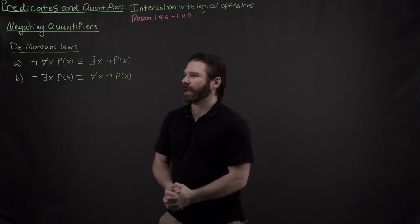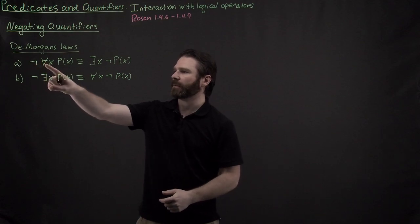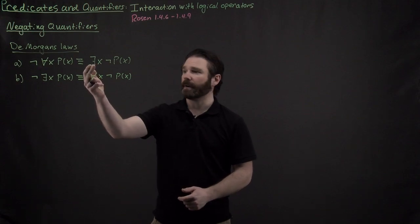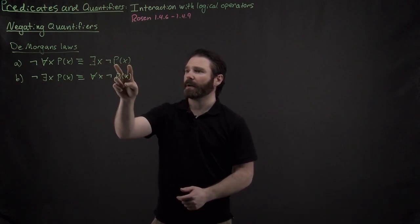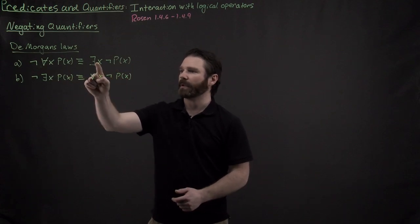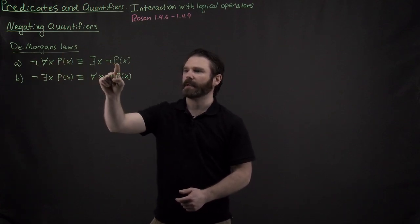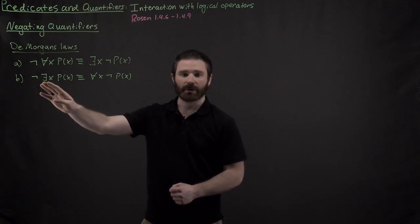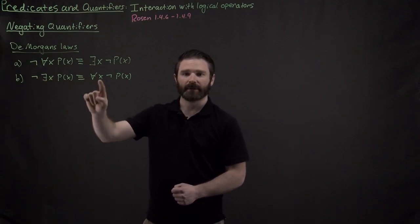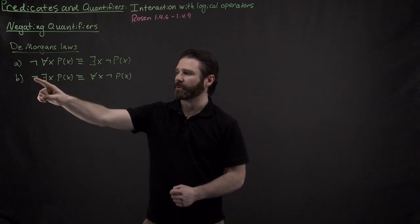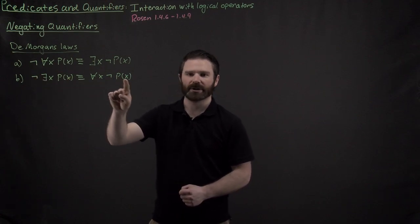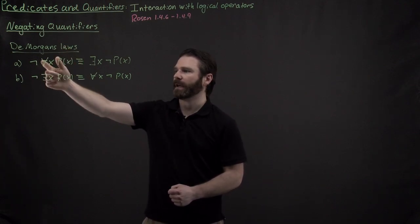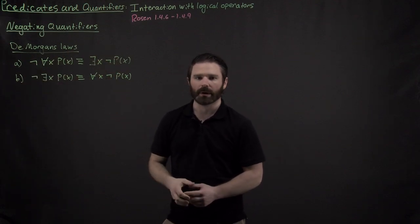So what are these saying? If I want to negate a universal quantifier, all I have to do is switch it to an existential quantifier and then put the not on my propositional function. I flip my quantifier and then put the not in front of my propositional function. Similarly, if I want to negate an existential quantifier, all I have to do is flip my existential to a universal and then distribute that not onto my propositional function. So negating quantifiers: you simply flip and then distribute your not.